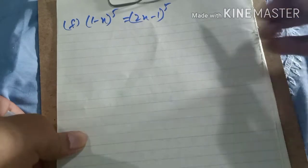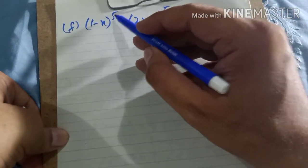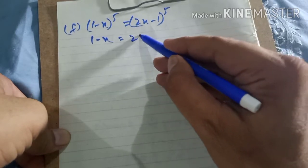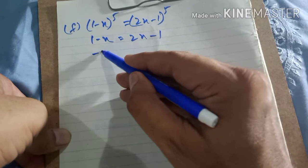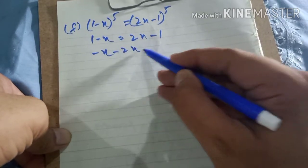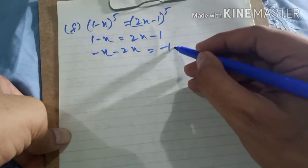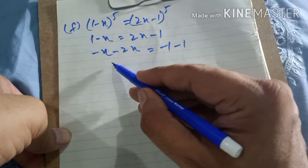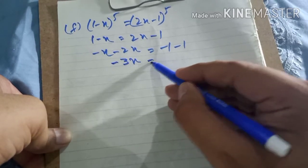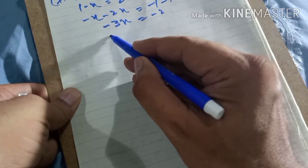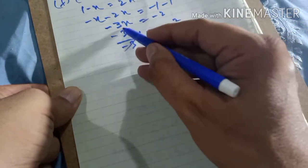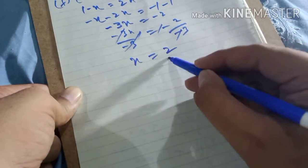Part f: powers are the same so we equate the bases: 1 − x = 2x − 1. Rearranging: 1 + 1 = 2x + x, so 2 = 3x. Dividing both sides by 3: x = 2/3.